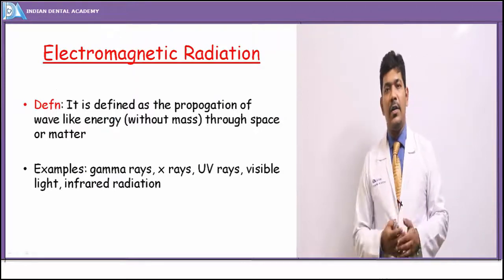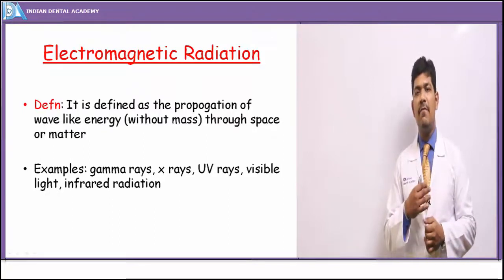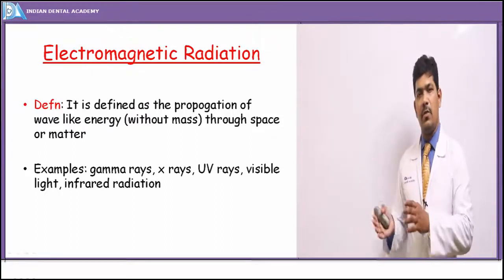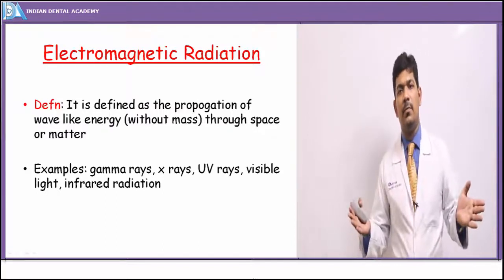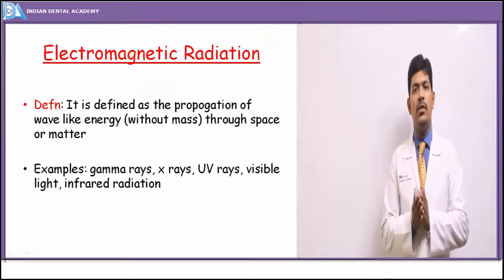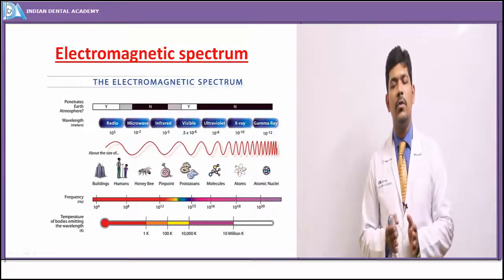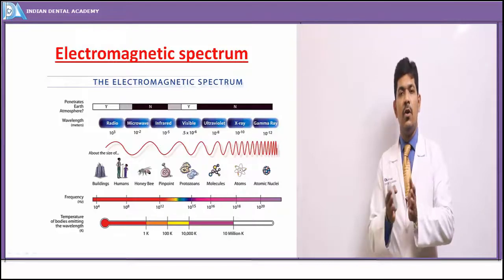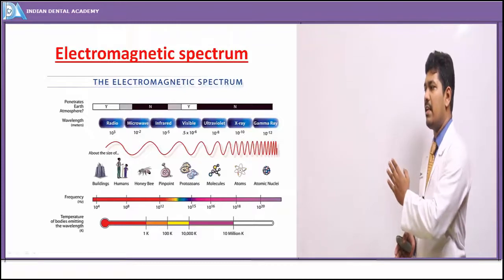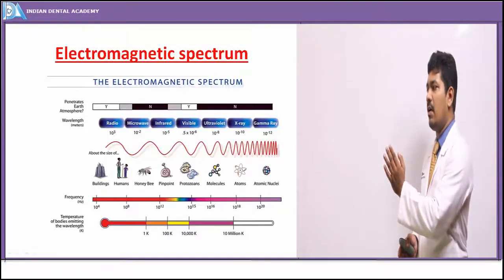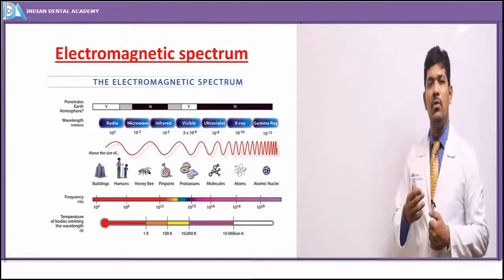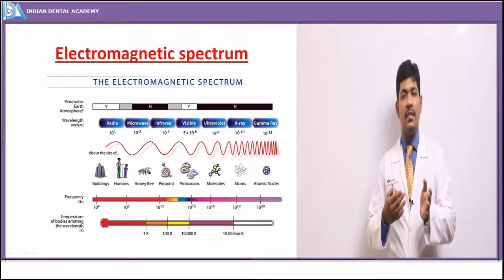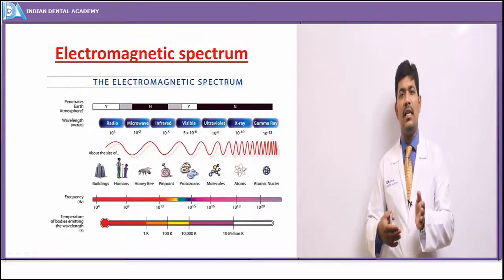Electromagnetic radiation is a wave-like energy without any mass, propagating through space or matter. Examples include gamma rays, x-rays, and UV rays across a broad spectrum, of which x-rays are most important for the dental physician. In the electromagnetic spectrum arranged by increasing wavelength or decreasing frequency, wavelength and frequency are inversely proportional — greater wavelength means less frequency, less energy, and less penetrating power.